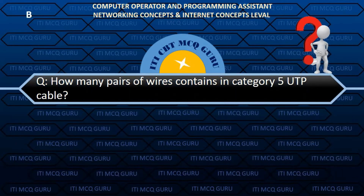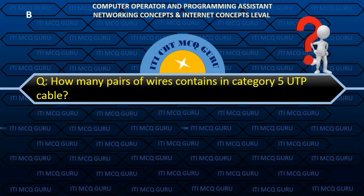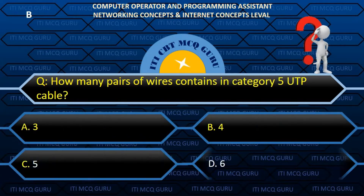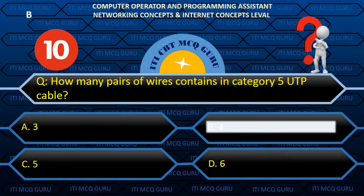How many pairs of wires are contained in a Category 5 UTP cable? B. Four.